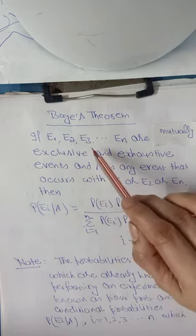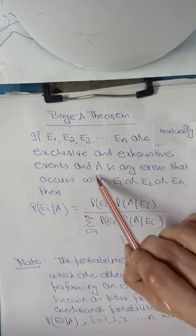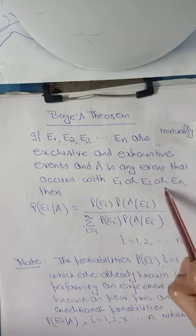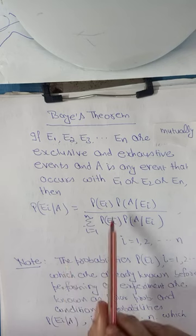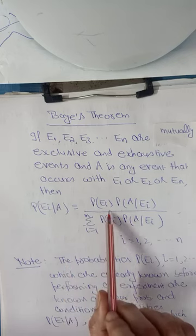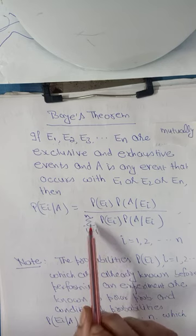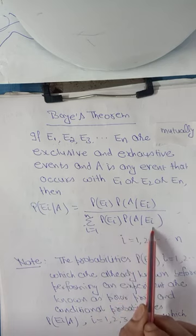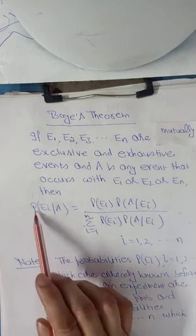If E1, E2, E3 up to EN are mutually exclusive and exhaustive events, and A is any event that occurs with either E1, E2, or EN, then the probability of Ei given A equals probability of Ei times probability of A given Ei, all divided by the sigma from i=1 to n of probability of Ei times probability of A given Ei.